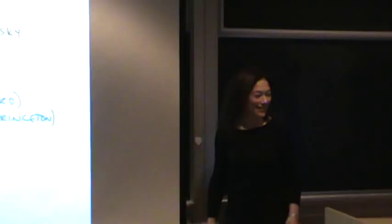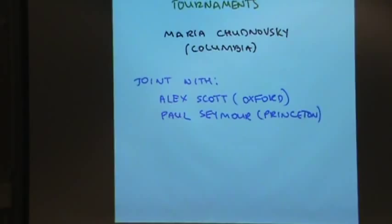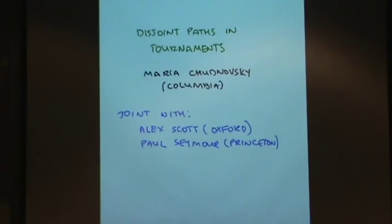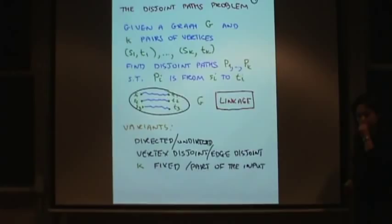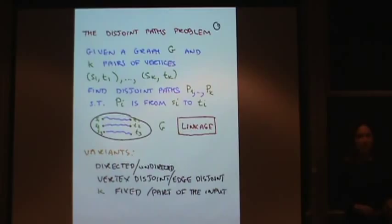Thank you very much for inviting me. It's a pleasure to be here. I'm not sure if this qualifies as experimental mathematics, but hopefully it's at least mathematics. So this is about disjoint paths in tournaments, and I'll explain what that means. It's joint work with Alex Scott from Oxford.